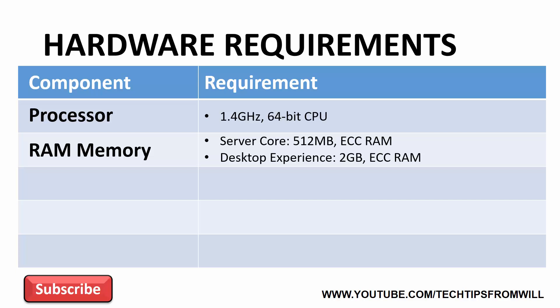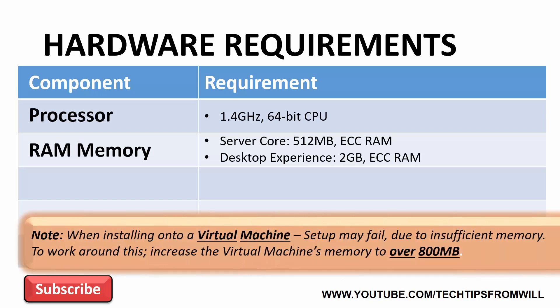Although the memory requirements listed here are accurate for the majority of installations, there is one exception to this rule. If you attempt to install Windows Server 2016 onto a virtual machine and you assign the absolute minimum requirement — just one processor core and 512 MB of RAM — Microsoft have acknowledged that this setup will likely fail due to insufficient memory. To get around this, Microsoft recommends that you increase the amount of RAM memory assigned to the machine to over 800 MB.